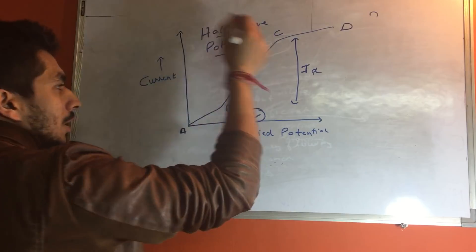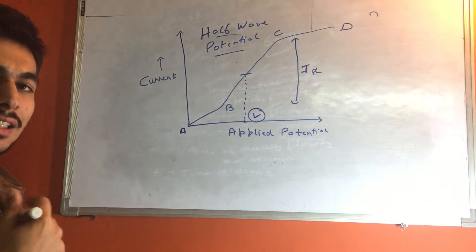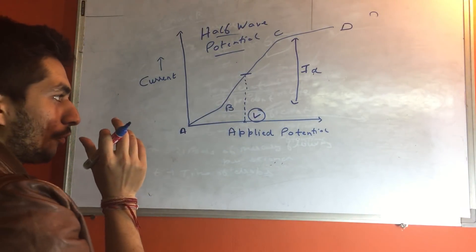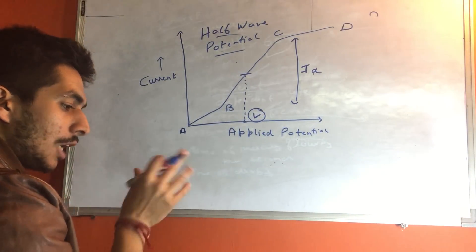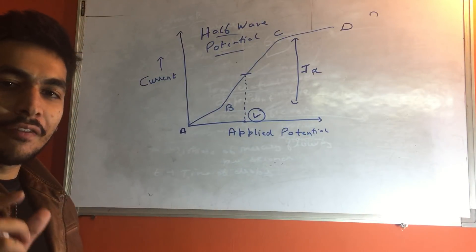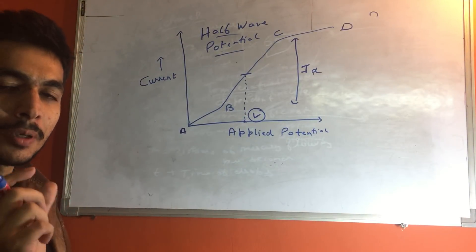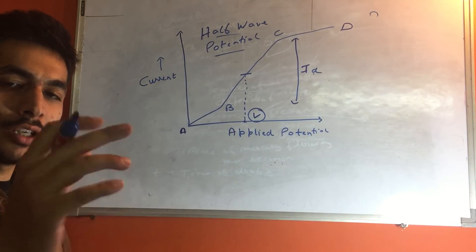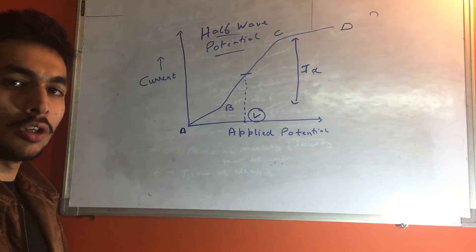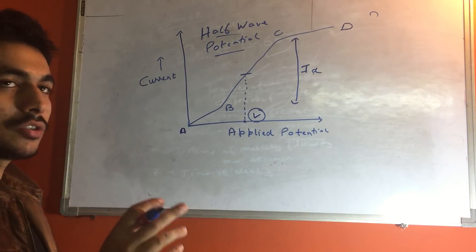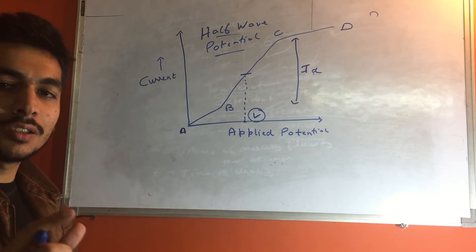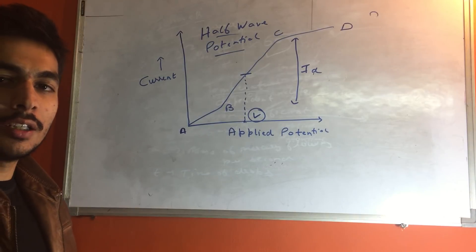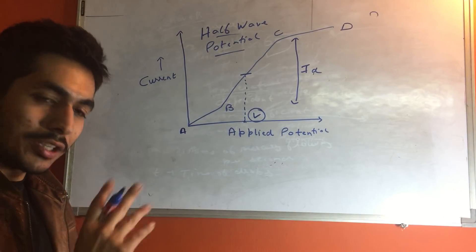The half wave potential is characteristic of every analyte. For cadmium, it will be a particular value; for zinc it will be a particular value; for nickel it will be a particular value. So the half wave potential is characteristic of the analyte.